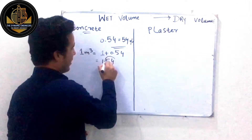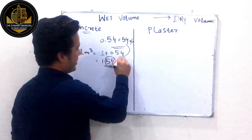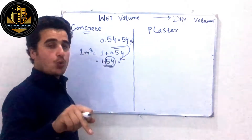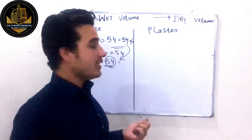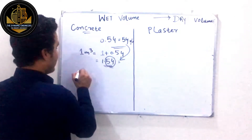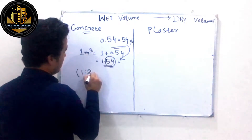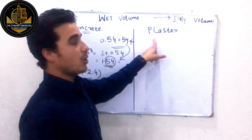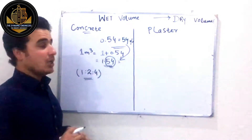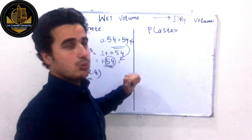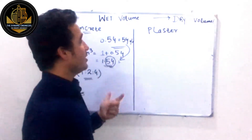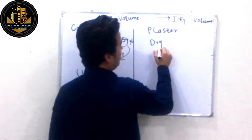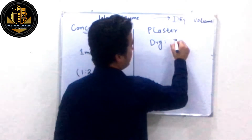This 0.54 means a 54% increase in volume. Now let's talk about plaster. What is the difference between the wet volume and dry volume of plaster? When we talk about plaster, the dry material volume will be increased by up to 33%.